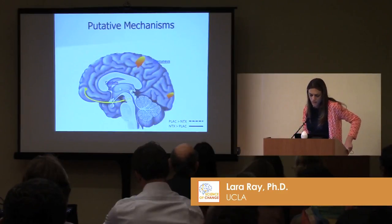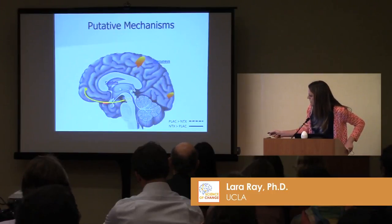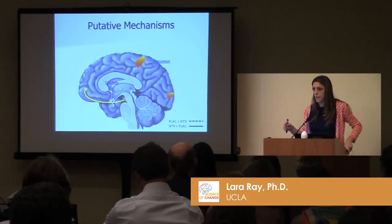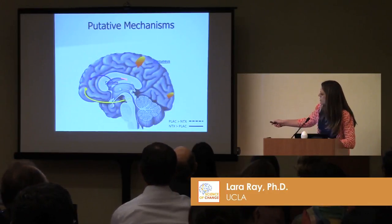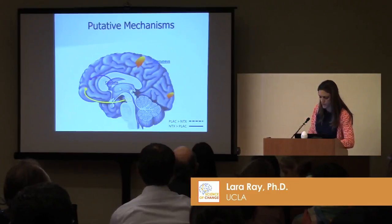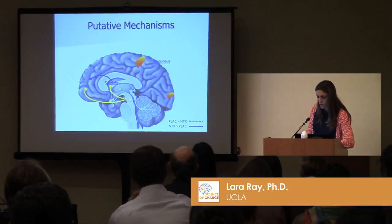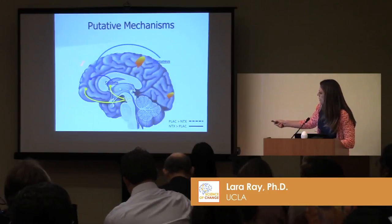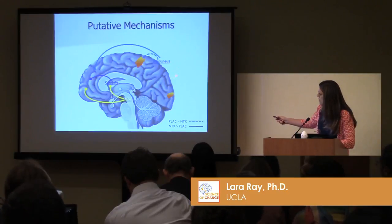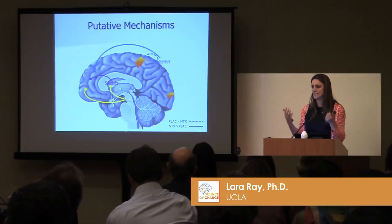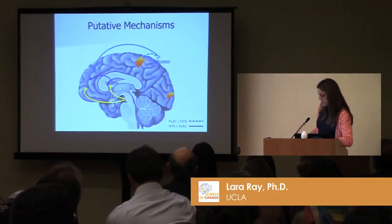Our best guess — understanding that we're not inferring causation — is that naltrexone is increasing connectivity from the VTA to PFC, primarily a dopaminergic pathway, and we think kappa opioid receptors may be implicated in this pathway. This might also disinhibit glutamatergic neurons and their connection back to the dorsal striatum. In some ways, naltrexone may be strengthening these control networks. The same applies to the precuneus, which we believe involves a glutamatergic pathway. Finally, it's weakening the association between the precuneus and sensory motor regions — we think of the precuneus as integrating sensory information necessary to experience cue-induced craving.